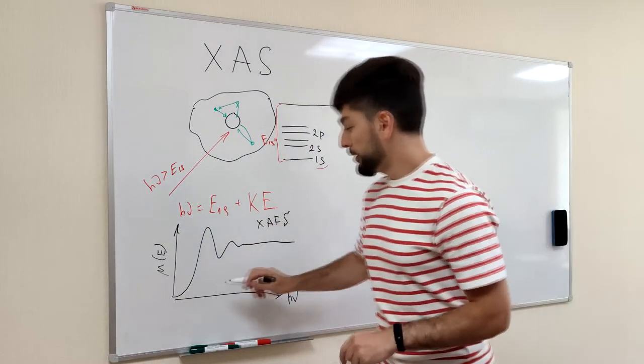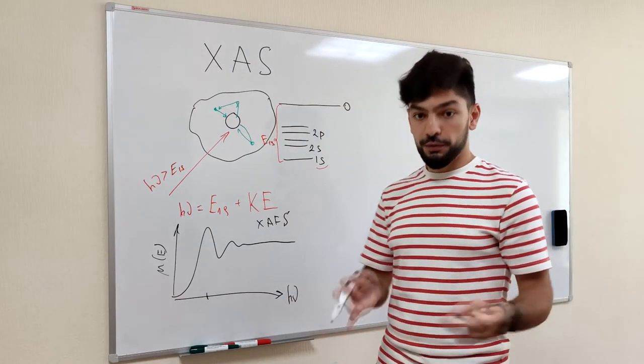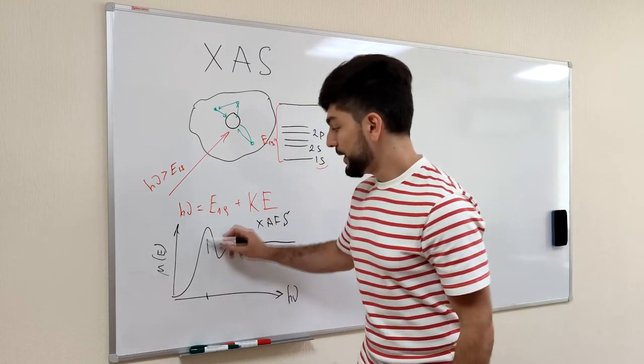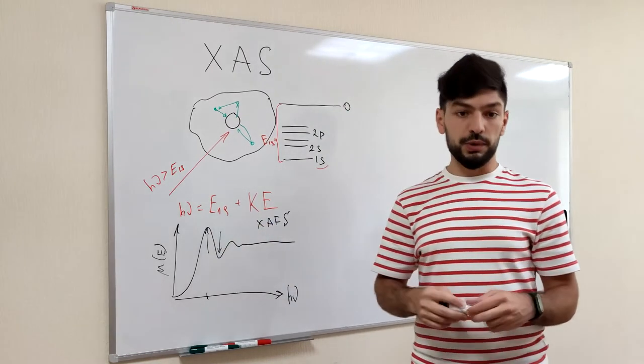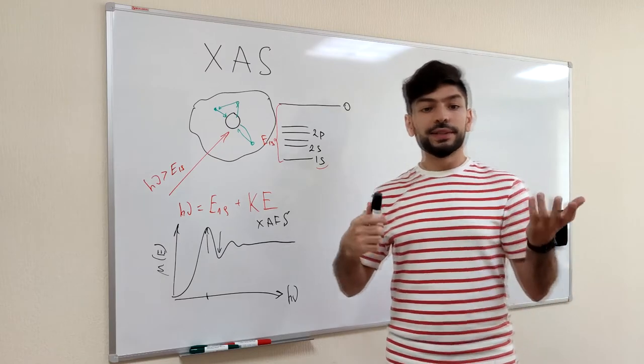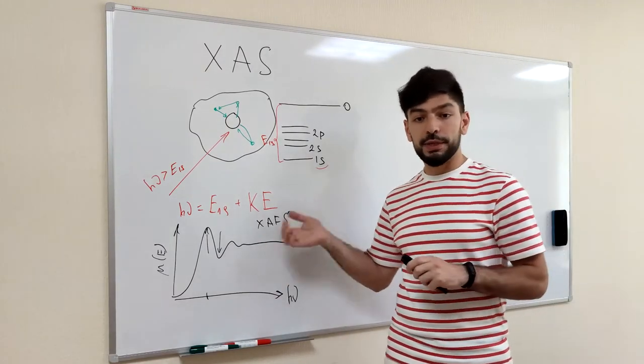And it tells us that for some photon energies absorption of photons is slightly higher or slightly lower. Now, let's guess what information is hidden in this spectrum.